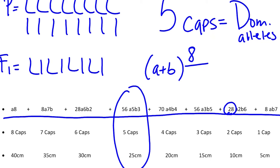When we look at this, we have 56 of your possible 256 combinations that will have at least 25 centimeter long ears, which means there is a 21.88% chance that this will happen. So using binomial expansion and understanding what the letters and numbers stand for really helps you crack this genetic code fairly quickly.